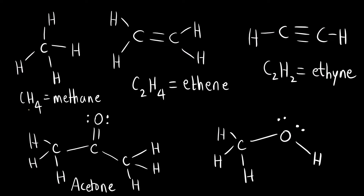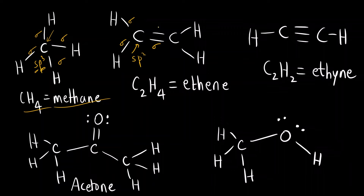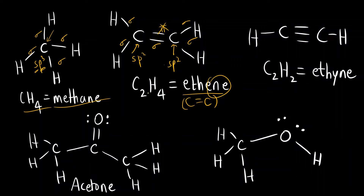For methane, the carbon has four sigma bonds — sp3 hybridization. In ethene, each carbon has one, two, three sigma bonds (the second bond in the double bond is pi and not counted) — sp2 hybridization. In ethyne, each carbon has only one sigma bond and two pi bonds, so the steric number is two — sp hybridization.